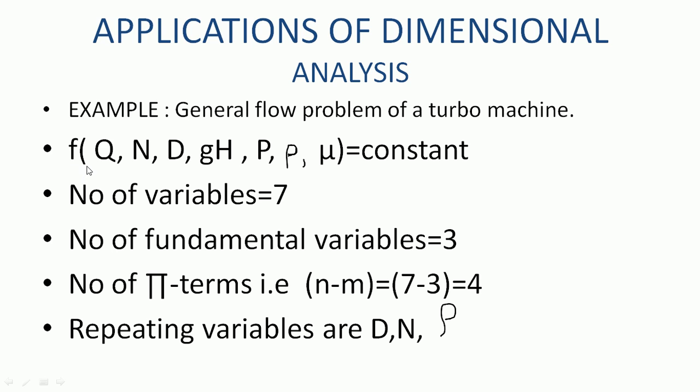Here Turbomachine consists of number of parameters which is a function of flow rate, speed, rotor size, energy per unit of mass flow, power, density and dynamic viscosity equal to constant. Number of variables in order are 7, that is n equal to 7. Number of fundamental variables is 3.